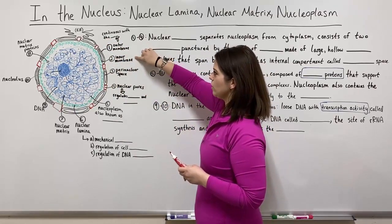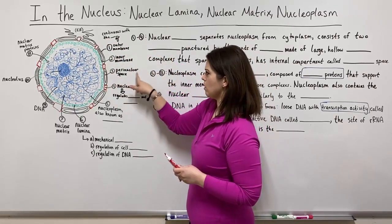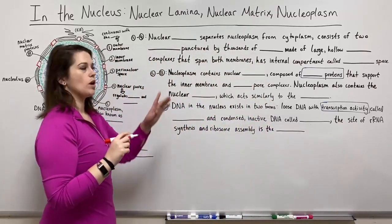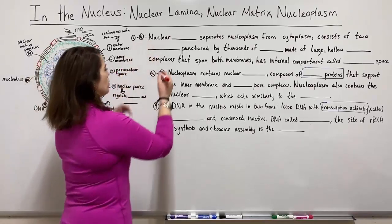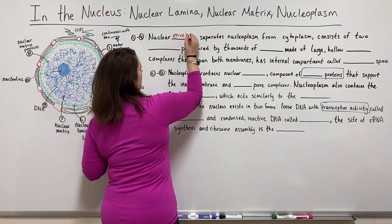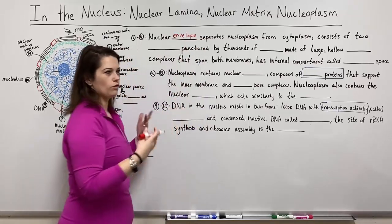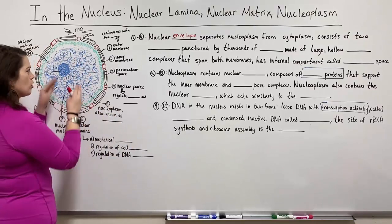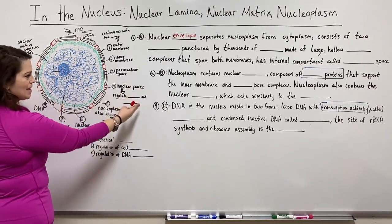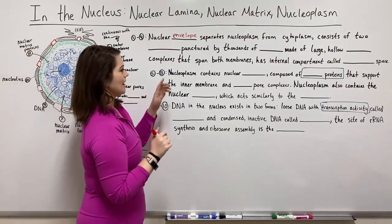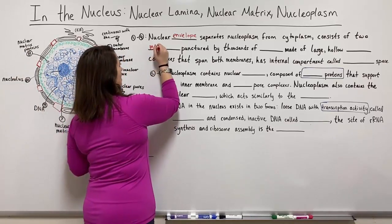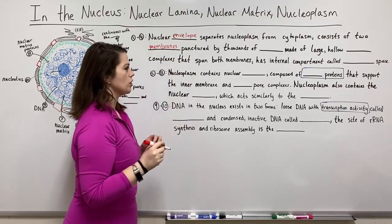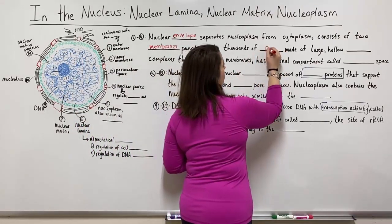We've got an outer membrane, an inner membrane, a space in the middle called the perinuclear space, and it's studded with nuclear pores. The nuclear envelope — that is the more formal name for the nuclear membrane — separates the nucleoplasm inside from the cytoplasm outside the nucleus. It consists of two membranes, the outer one and the inner one, punctured by thousands of nuclear pores.